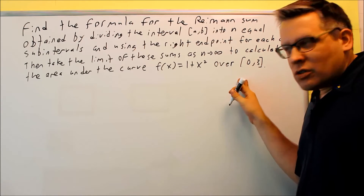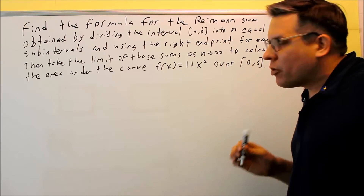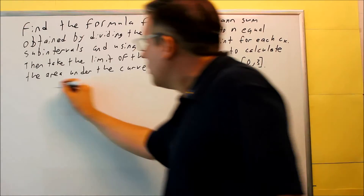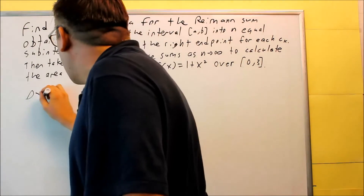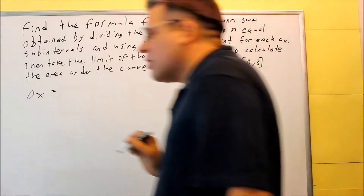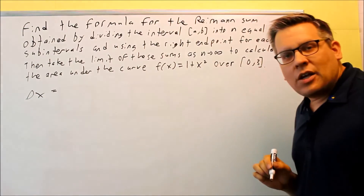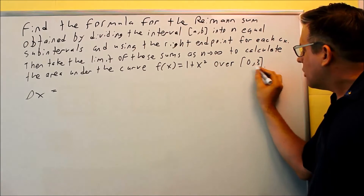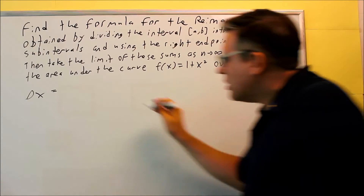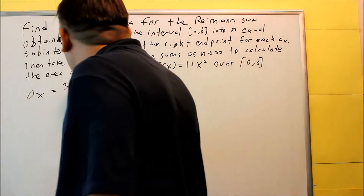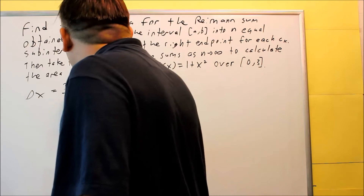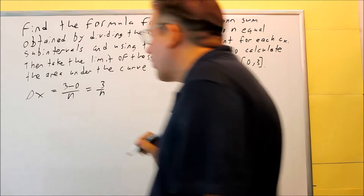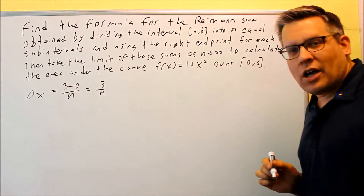We're going to do that first. The formula for delta x is (b minus a) over n. The a is zero and b is three, so we're going to do (3 minus 0) over n, which means that 3/n is your delta x.